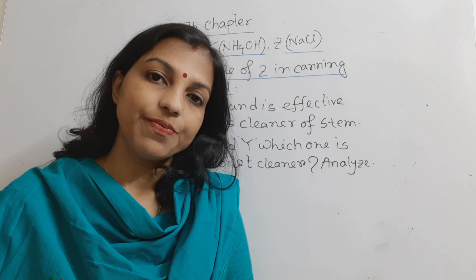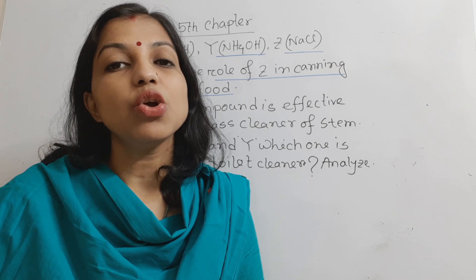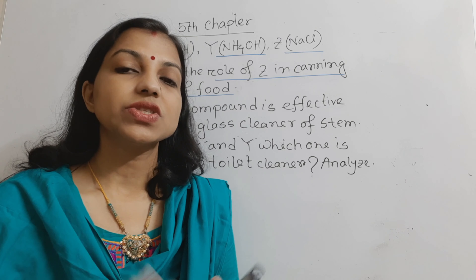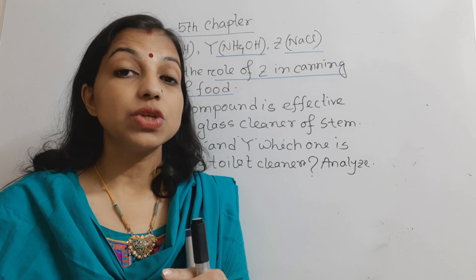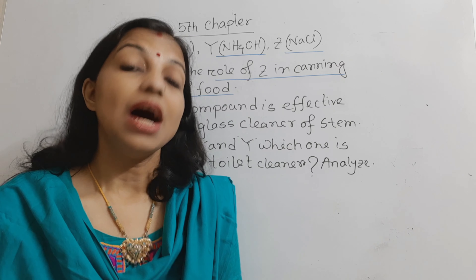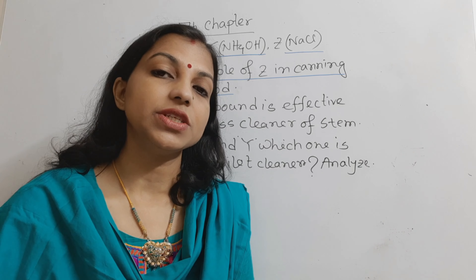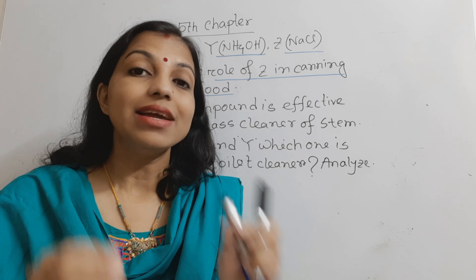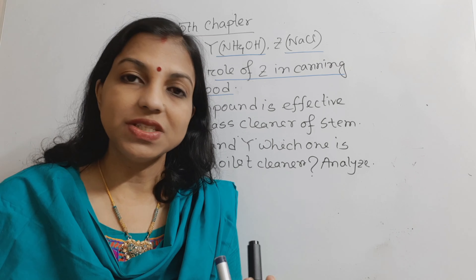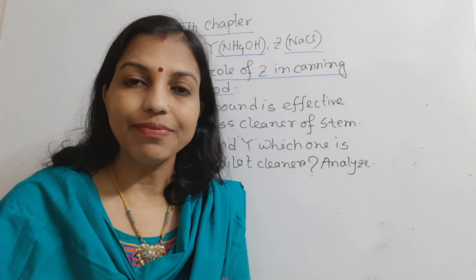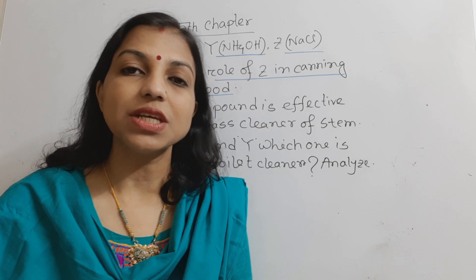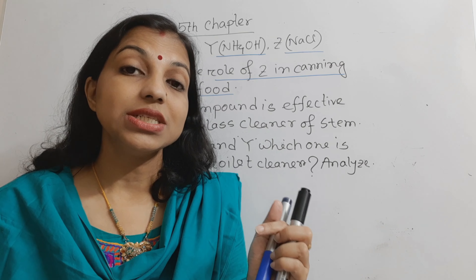In the canning process, sodium chloride is used as a preservative. When you want to preserve food, you must use a preservative in the canning process. If we use 12% sodium chloride in food, it will be preserved for several days — for a long time. If we want to preserve food for a short time, we can use less than 12% salt.